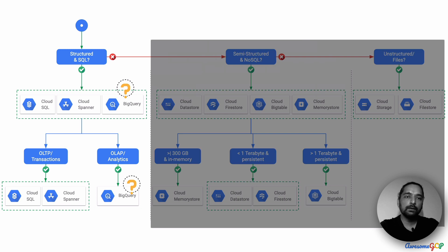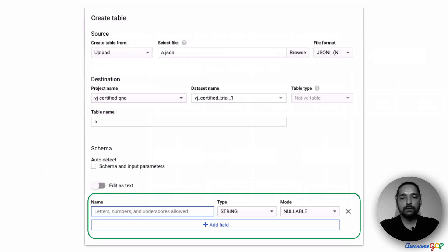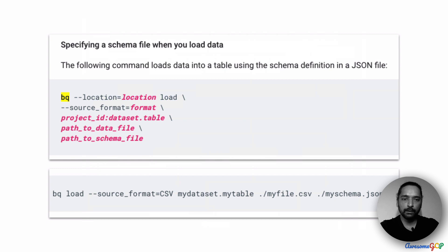BigQuery is a great option because we want to run SQL queries on the final data. In the GCP console, there is a way to specify the schema for each of the fields — you can give a name for the field, a type, and whether it's nullable or not. If you don't want to do this via the console, you can also do it via the BQ command line tool, providing a source format along with the data you are going to import. So this seems like a possible option.